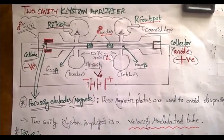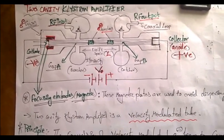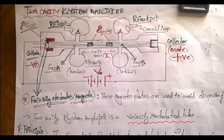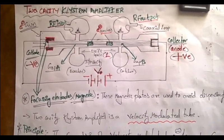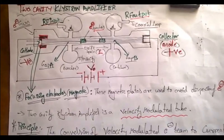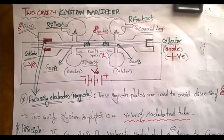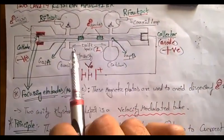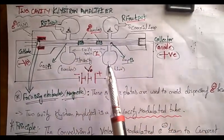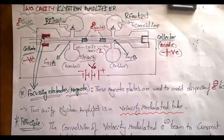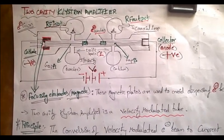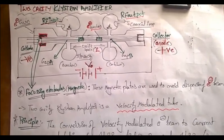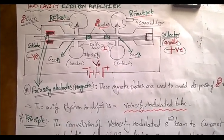For microwave frequencies, we need to design a structure that can handle microwave frequencies, so we use klystron amplifiers. We can also use multi-cavity klystron amplifiers — the operation is the same, but instead of two cavities we use many. The ultimate aim is to increase the strength of the input signal.